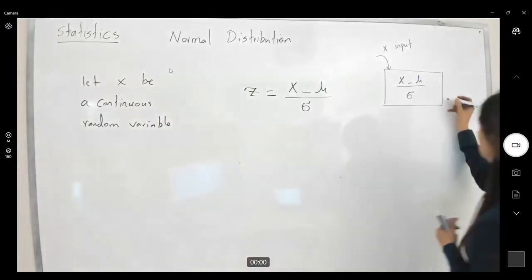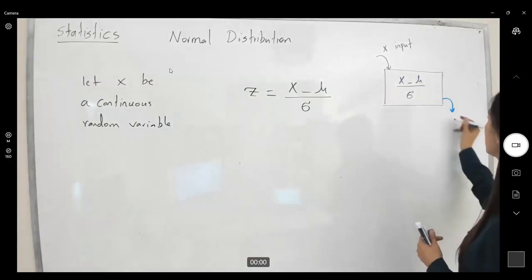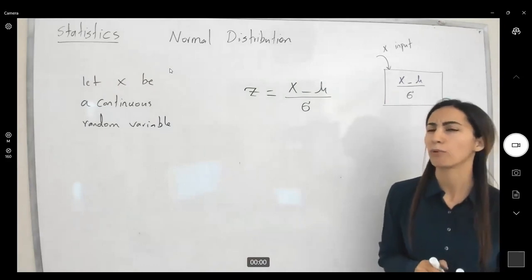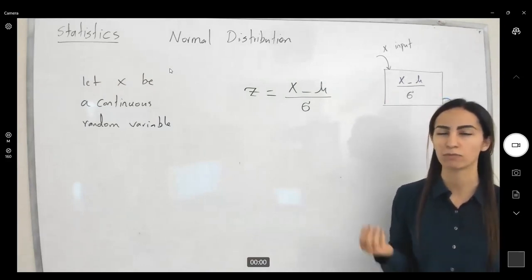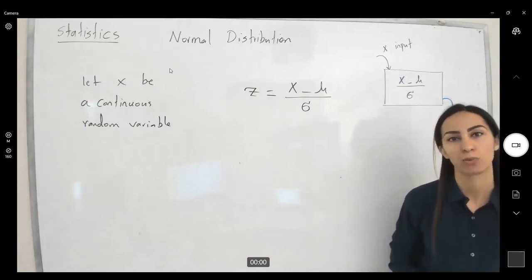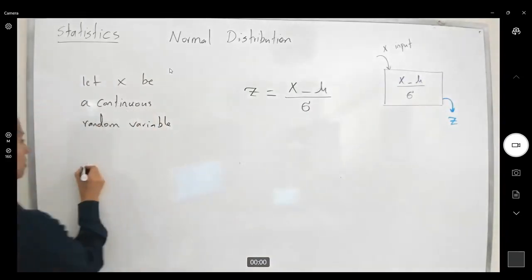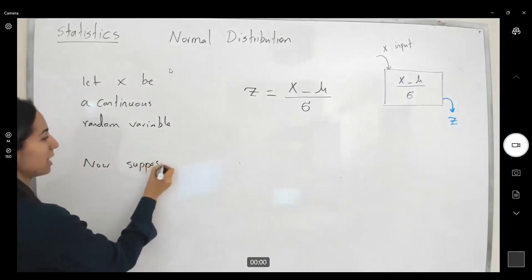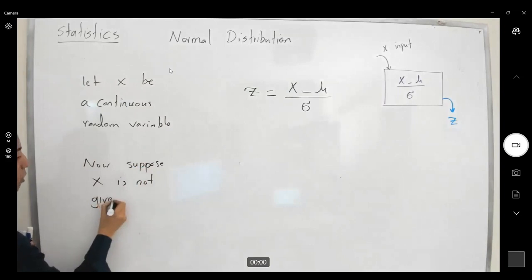Now I expect you to ask, what if I have z and I want to know what was the actual data? What was the actual number that it was working with? Now suppose x is not given, z is given.